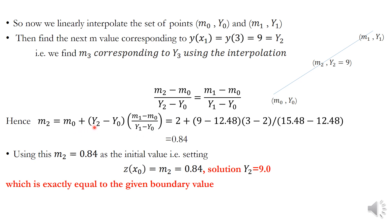Substituting m0, y2, y1, and m1 values, m2 is obtained as 0.84. Using this new m value as the initial value — z of x0 equal to m2 equal to 0.84 — the corresponding solution is obtained as exactly 9.0. This means the obtained m value is the exact initial value, so we can use it for finding the value of y at any x point.